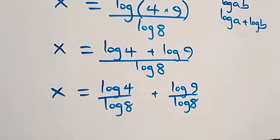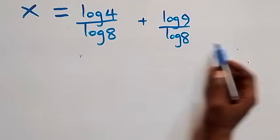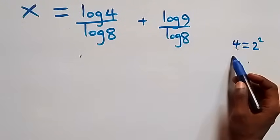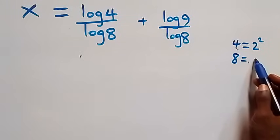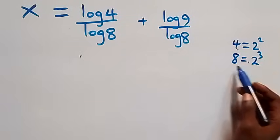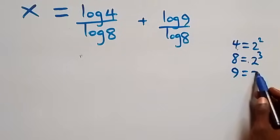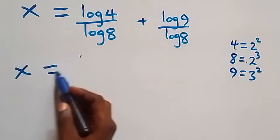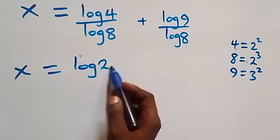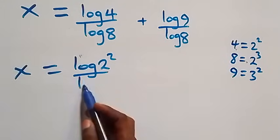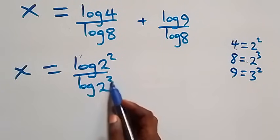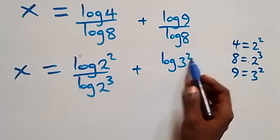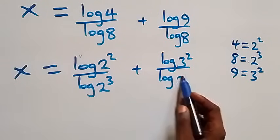We express 4 as 2 times 2, which is 2 squared, and 8 as 2 times 2 times 2, which is 2 raised to power 3. Also 9 as 3 times 3, which is 3 squared. So x equals log 2 squared over log 2 cubed, plus log 3 squared over log 2 cubed.